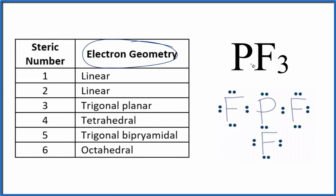When we look at the electron geometry for PF3, we need to take into account all of the things bonded to that central phosphorus, all the electron domains.